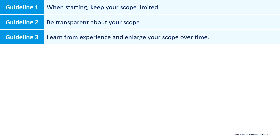Moving on to the third guideline — and this one I've mostly explained already. The guideline is: learn from experience and enlarge your scope over time. These three scope guidelines go together: start with a small scope, be transparent about that scope, learn from experience, enlarge your scope, and continue to be transparent about the scope.